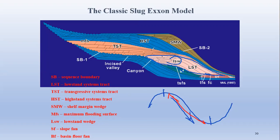After sea level fall, there is transgression. The end of regression is represented by the transgressive surface. Above the transgressive surface, the transgressive system track develops.